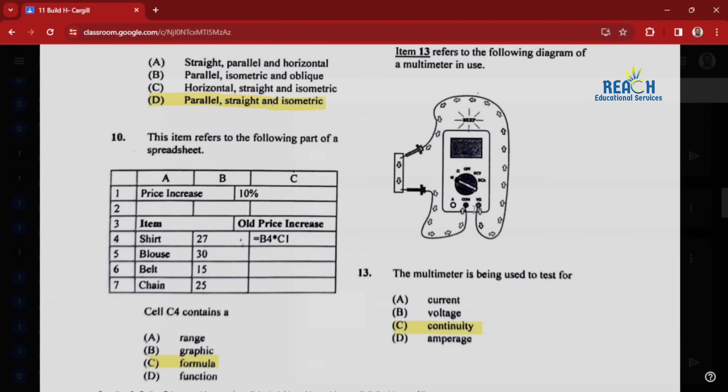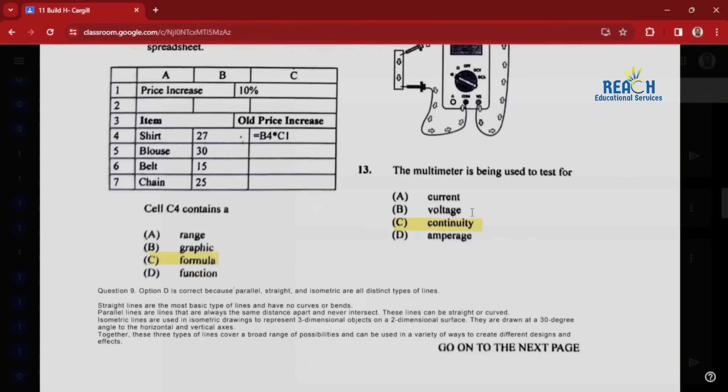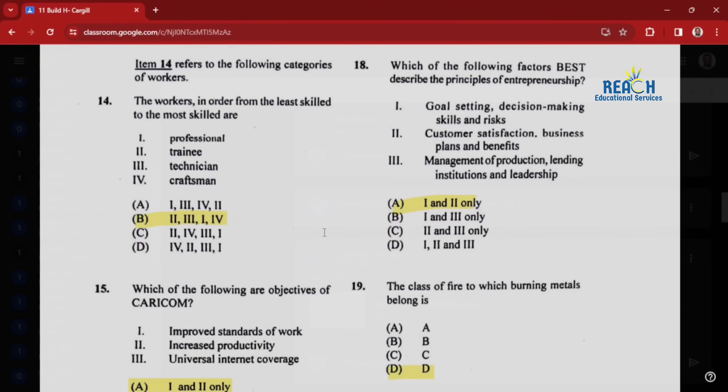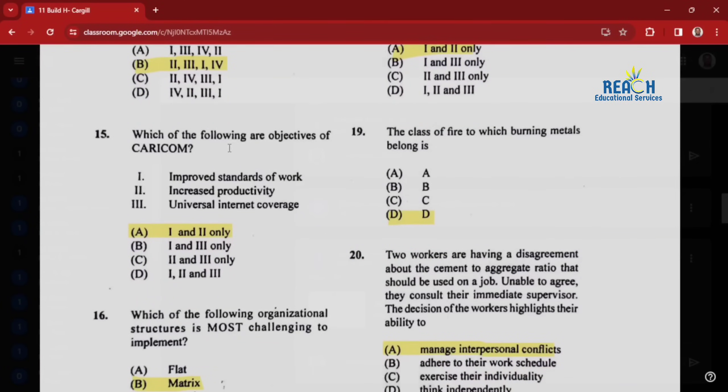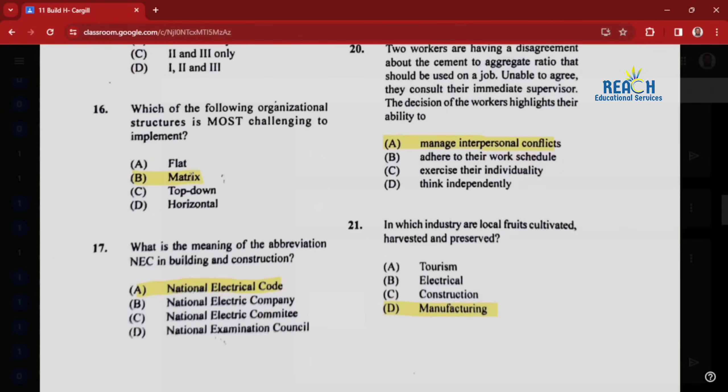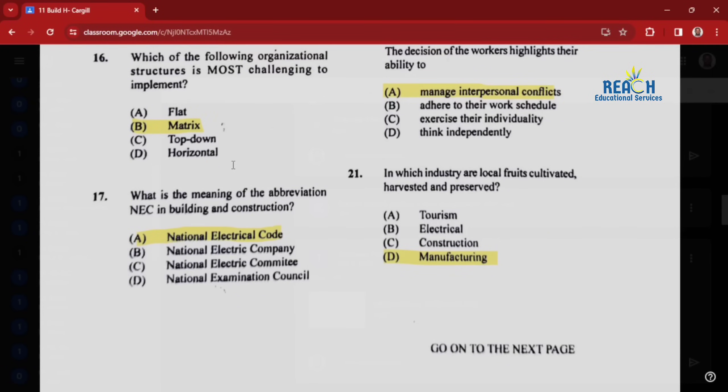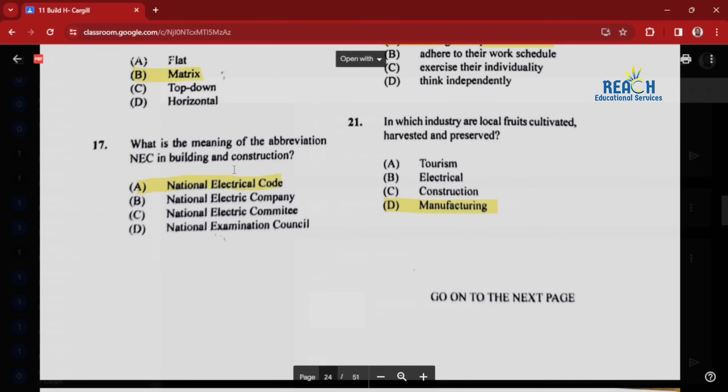Item thirteen refers to the following diagram of a multimeter in use. The multimeter is being used to test for continuity. Question fourteen: the workers in order from least skilled to most skilled are trainee, technician, professional, and craftsman - in this case it would be trainee, technician, craftsman, and professional. Question fifteen: which of the following are objectives of CARICOM? Improve standard of work, increase productivity, universal internet coverage - it's just one and two, nothing to do with universal internet coverage. Question sixteen: which organizational structure is most challenging to implement? That's the matrix because there's a lot of different stuff going on. Question seventeen: what is the meaning of the abbreviation NEC in building and construction? That is the National Electrical Code.